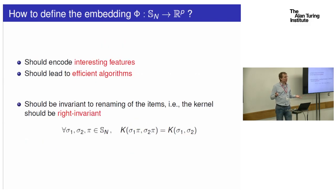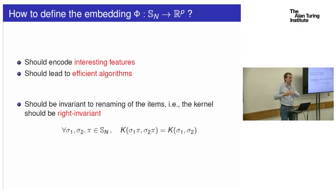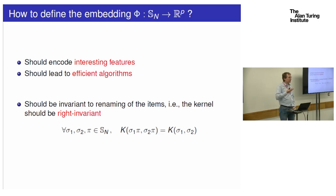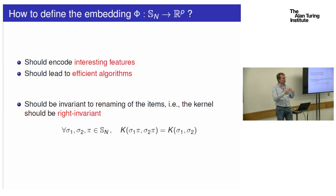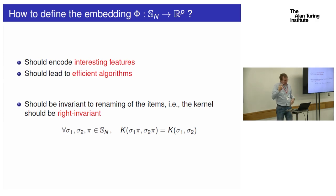This is an ill-posed question — the question is just how can you represent a permutation as a vector, and any choice is valid. So how can we put more constraints on the kind of representations we want? Depending on the problem, you may want to encode in phi of sigma some interesting features. Another constraint is efficiency: the symmetric group is large. If you have permutations over a million pixels, the size of the symmetric group is roughly a million to the power of a million, so some representations could lead to computationally complicated problems.